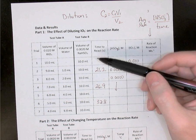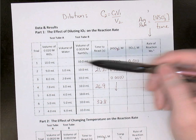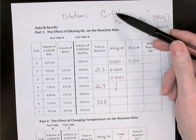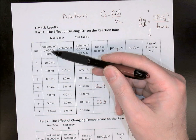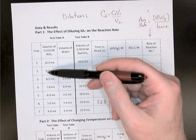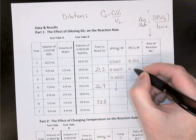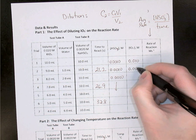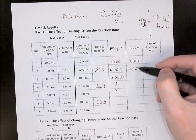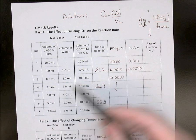For the second trial with 9 mL of KIO3 — the one you've added to your data — we plug in C1 = 0.020, V1 = 9 mL, divided by 20. The concentration is now 0.0090 molarity instead of 0.010. Fill in the concentrations using the volumes of iodate and the dilution formula.